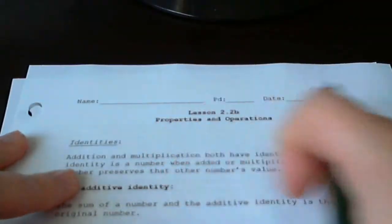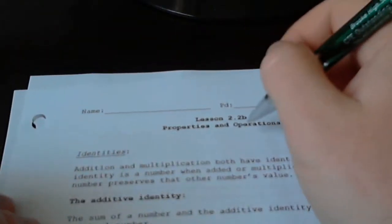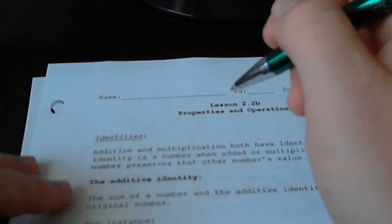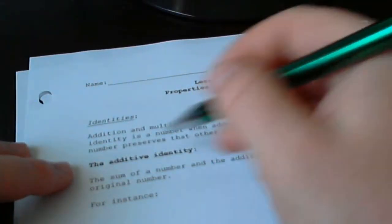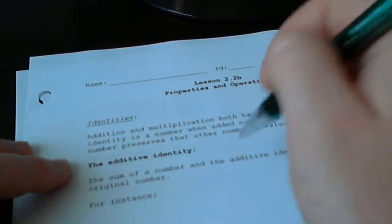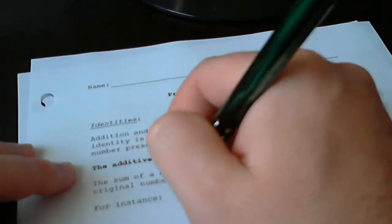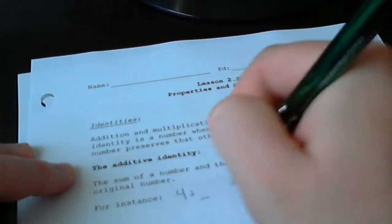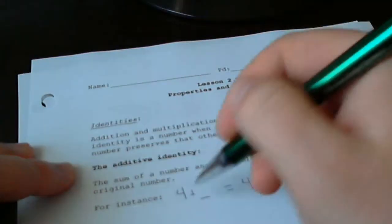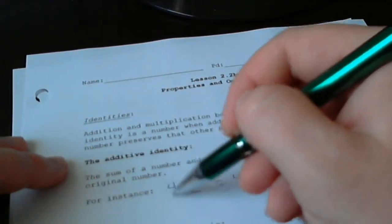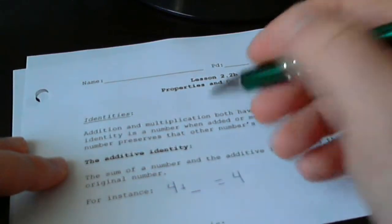To begin lesson 2.2, properties and operations, we're going to talk about two identities. The first one is the additive identity. It's a number that I can add to another number and get that other number back. For instance, 4 plus what will give me 4? That's the identity part of this - the 4 retains its identity.